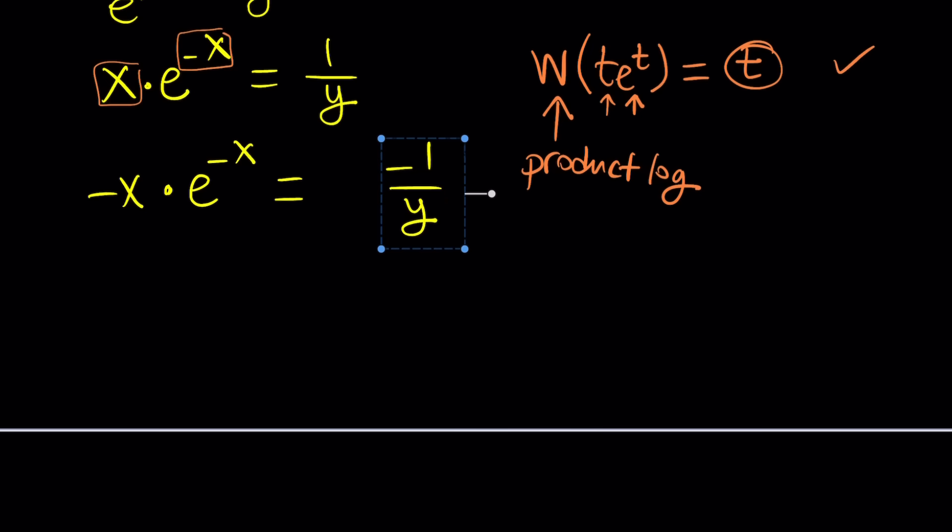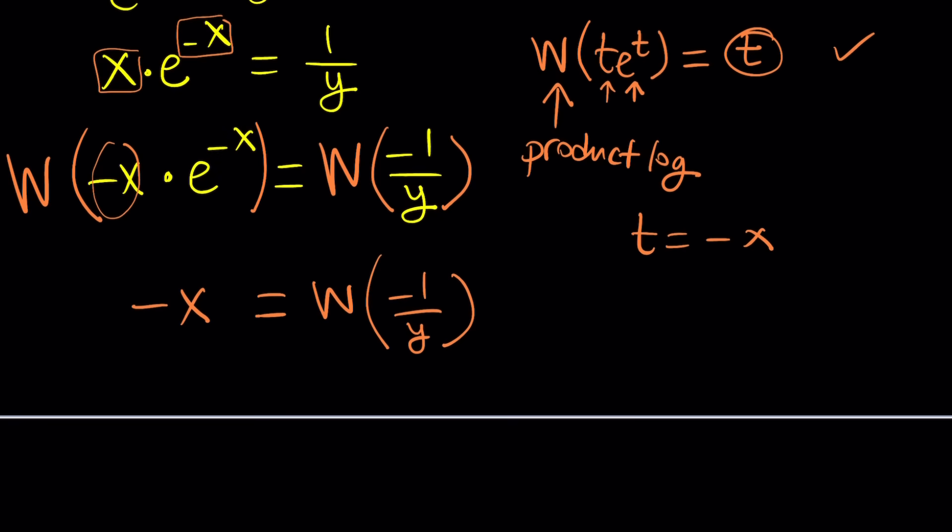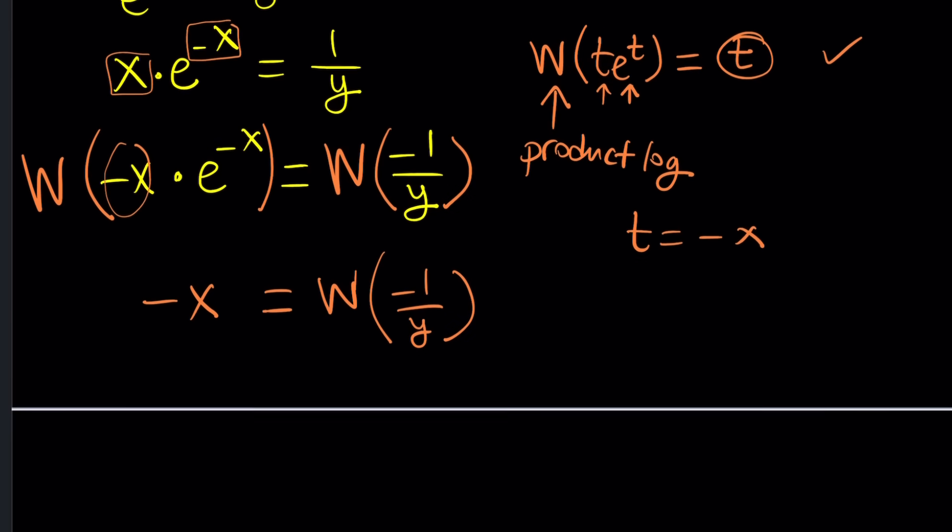Let me show you how we can do that. Let's move this to the right. And then I'm going to apply W on both sides, a big W here and a big W here. And when I apply it on negative x e to the negative x, notice that in this case, t happens to be negative x. So when I apply Lambert's W, it's just going to give me one of these. So this will become negative x.